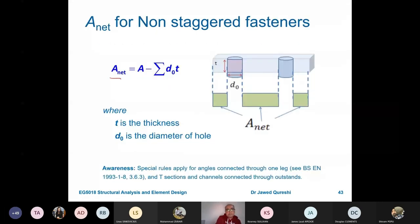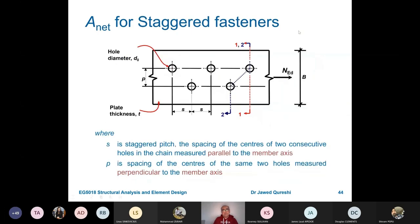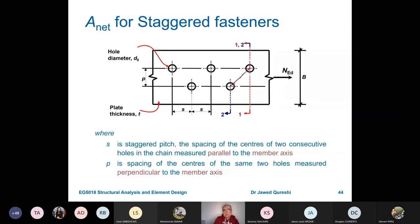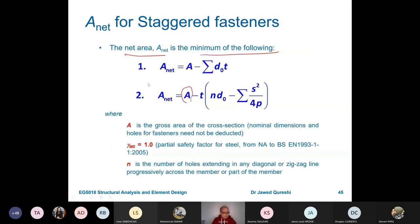Now how do we work out Anet? Anet is area of the section minus summation of all holes times the thickness. So whatever holes are there, you times it by thickness. This is Anet for non-staggered bolts. But if you have staggered bolts, this formula—the net area has to be minimum of the following, where A is the total area, t is the thickness, and n is the number of holes extending in a diagonal zigzag line. S is the staggered pitch, P is the perpendicular pitch between these bolts. This is the formula.